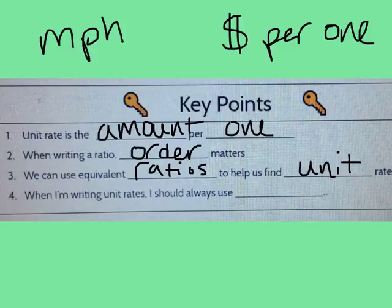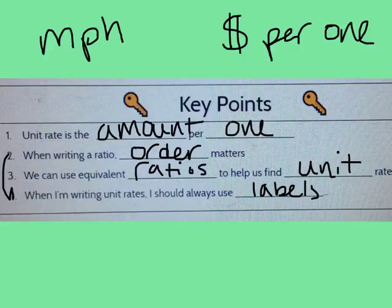If I know how much it is for seven apples, then I can find the cost for one apple by dividing. And lastly, when I'm writing unit rates, I should always use labels. This goes back to our second point, that we want to make sure that we're all organized in order to find the correct unit rate.